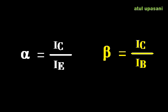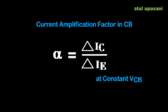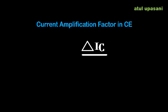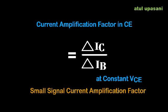For small changes in the currents, these factors are called small signal current amplification factors. Alpha is the ratio of a small change in collector current to a corresponding small change in emitter current, with collector-to-base voltage constant: alpha = ΔIC/ΔIE. Beta is the ratio of a small change in collector current to a corresponding small change in base current, with collector-to-emitter voltage constant: beta = ΔIC/ΔIB.